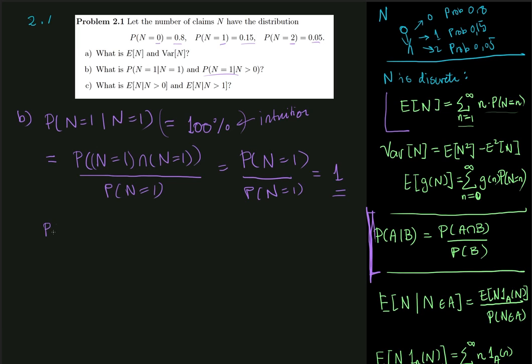And now the probability that N is equal to 1, I think I'm going to change a color here so that we can see that we're actually switching between different parts of the exercise. So the probability that N is equal to 1, given that N is greater than 0, let's just take a look at the intuition here. So if N is greater than 0...